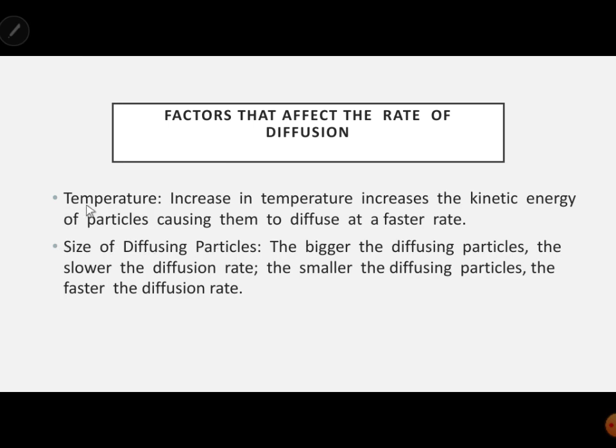The fourth factor is temperature. An increase in temperature increases the kinetic energy of particles, causing them to diffuse at a faster rate. When answering how temperature affects diffusion, mention both sides: at high temperature, particles gain more kinetic energy and move faster, increasing the diffusion rate. At low temperature, particles have less kinetic energy, less speed, and the rate of diffusion is slow.